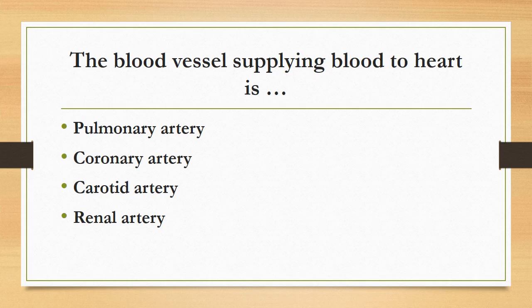The blood vessel supplying blood to the heart is: pulmonary artery, coronary artery, carotid artery, or renal artery? The correct answer is coronary artery. The coronary artery supplies oxygenated blood to the heart. The pulmonary artery carries deoxygenated blood from the right ventricle to the lungs. The carotid artery is the major blood vessel in the neck supplying blood to the brain. The renal artery carries blood from the heart to the kidneys.